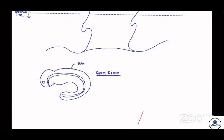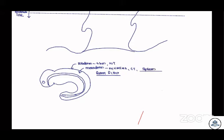Ectoderm — what does it give rise to? Skin, and one very important structure: the nervous system. Never forget that. Then the mesoderm — what does it give rise to? Muscles, connective tissues, and so on. Also importantly, the spleen is a derivative of the mesoderm. The reason I mention the spleen is because the endoderm gives rise to the GI tract.